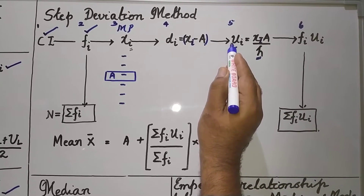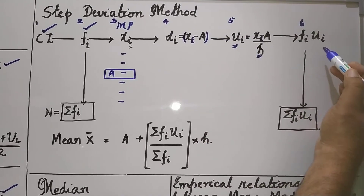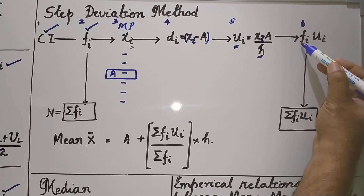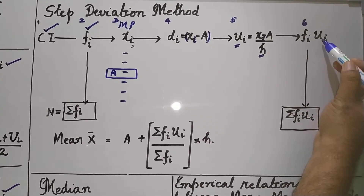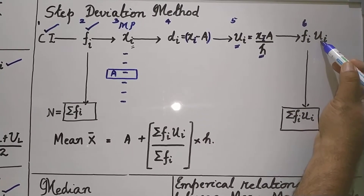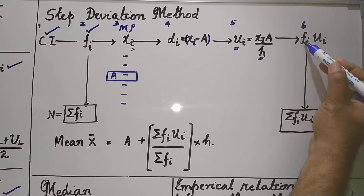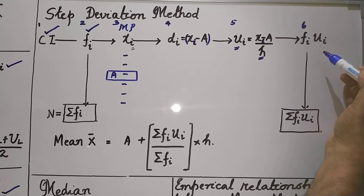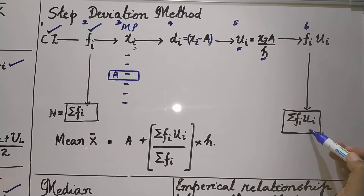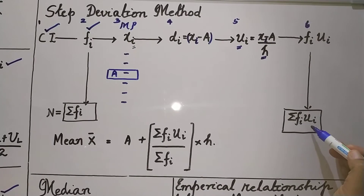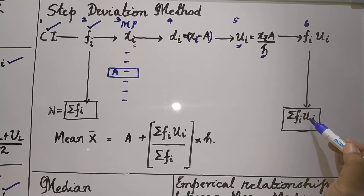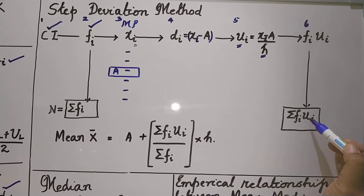The last column will be the product of frequency and step deviation, fi into ui. Add up fi and ui to get sigma fi ui.